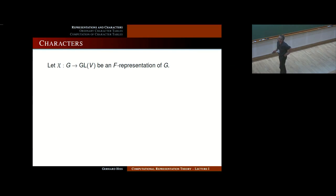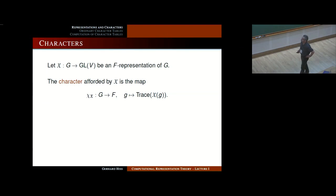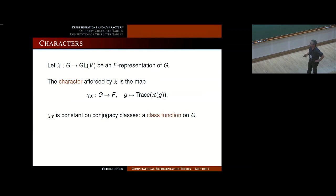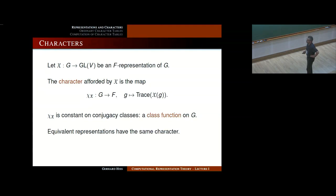To simplify the classification of irreducible representations, a good idea is to look at characters. If you have a representation, the character afforded by it is the map which sends a group element to the trace of the representing matrix on the vector space V. This is now just a function from G to F instead of a function from G to GL(V). Since conjugate elements or similar matrices have the same trace, this character is constant on conjugacy classes — it is defined on the set of conjugacy classes of G.